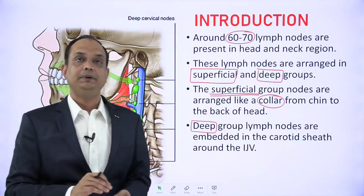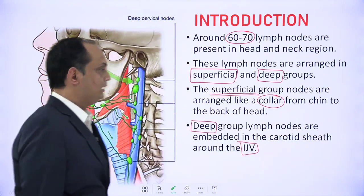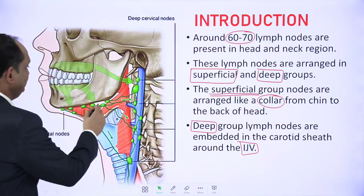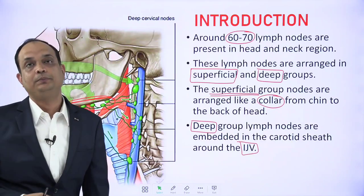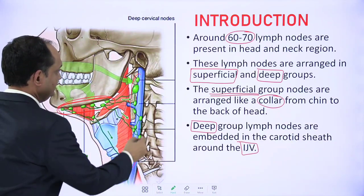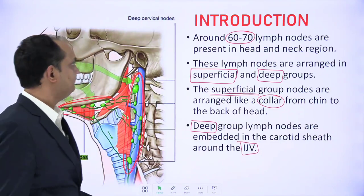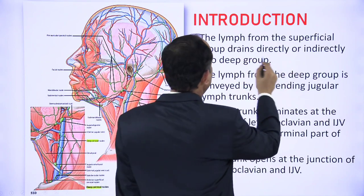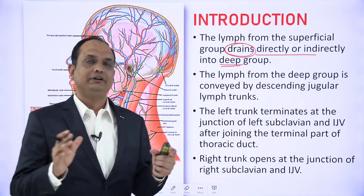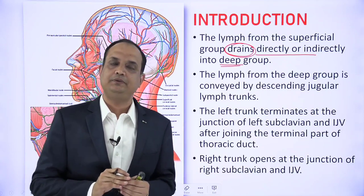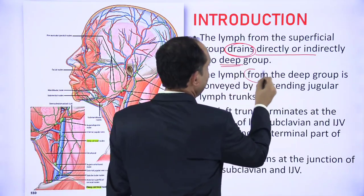The deep group of lymph nodes are embedded deeply around the carotid sheath, mainly around the internal jugular vein. The lymph nodes present along the lower border of mandible are the superficial group, while those along the internal jugular vein are the deep group. Lymph from the superficial group ultimately drains directly or indirectly into the deep group.